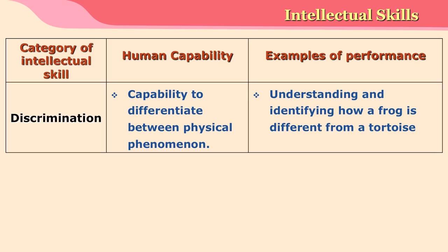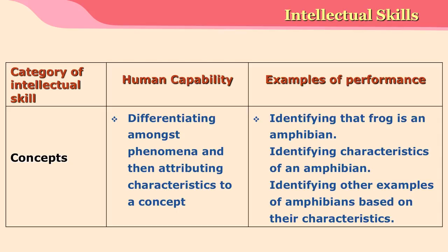Discrimination is the capability to differentiate between physical phenomena — for example, identifying how a frog is different from a tortoise. Concepts involve differentiating amongst phenomena and attributing characteristics to a concept — for example, identifying that a frog is an amphibian, identifying the characteristics of an amphibian, and identifying other examples of amphibians based on those characteristics.